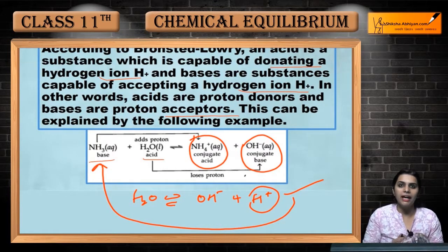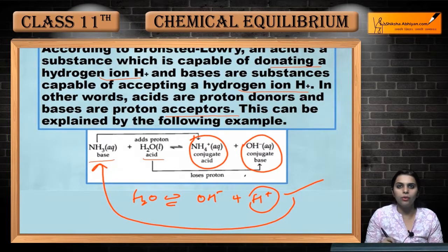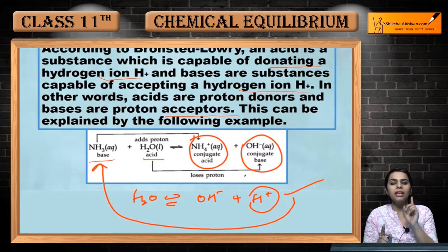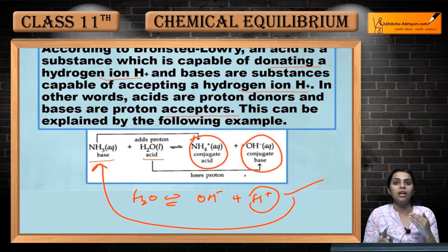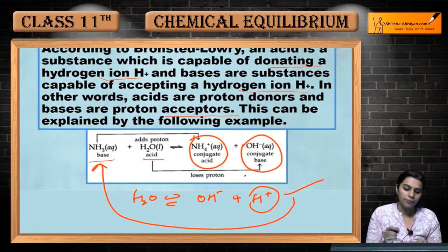When an acid has donated its proton, it becomes OH-negative. And what is OH-negative? It is a base. What do we call it? We call it the conjugate base — because it has converted from an acid into a base by donating a proton. So we call it the conjugate base.